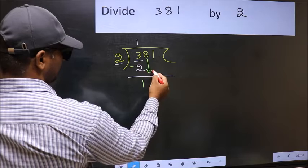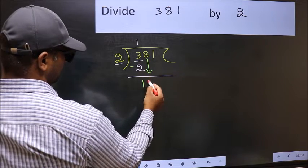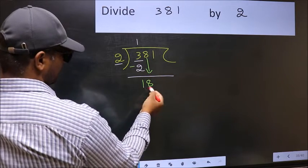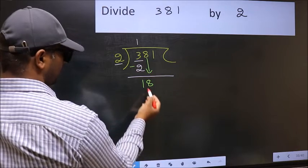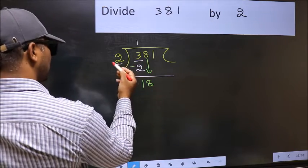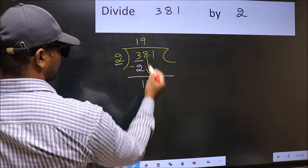After that, bring down the beside number. So, 8 down. Here we have 18. When do we get 18 in 2 table? 2 9s, 18.